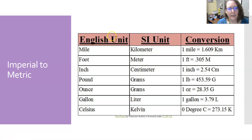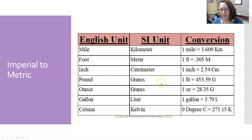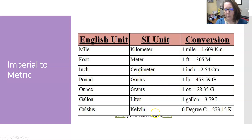The English or imperial units are miles, foot, inch, pound, ounce, and gallon. The SI units are kilometers, meters, centimeters, and grams. Gram is the standard unit for mass, though you can also use kilograms, and liter for volume, and Kelvin for temperature.